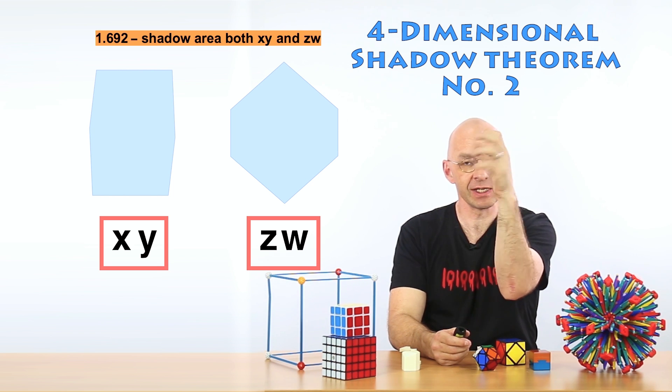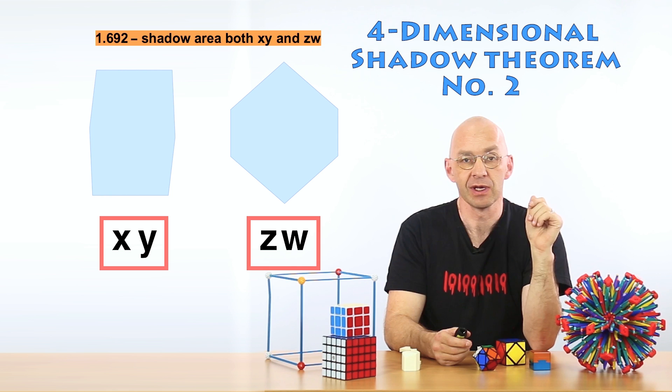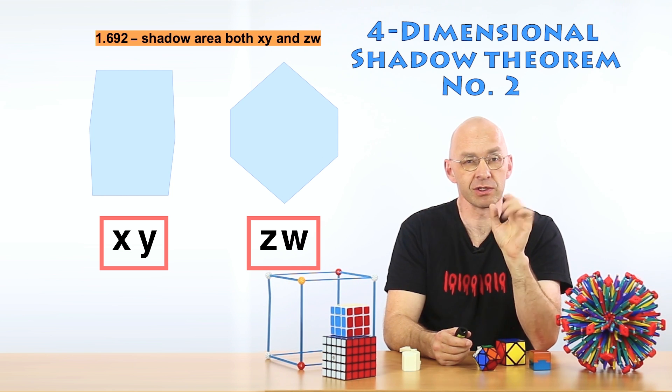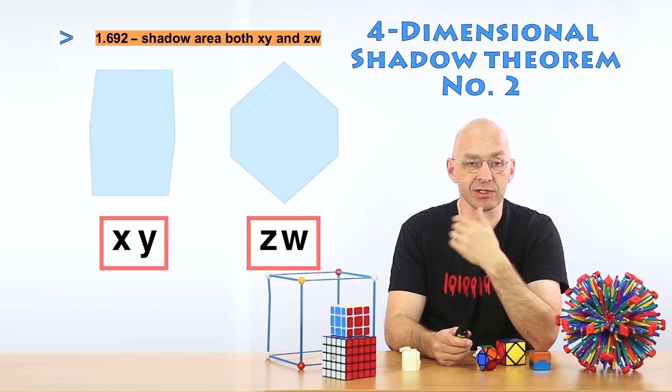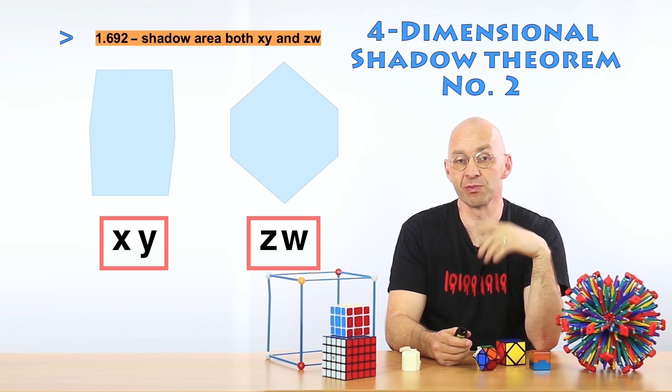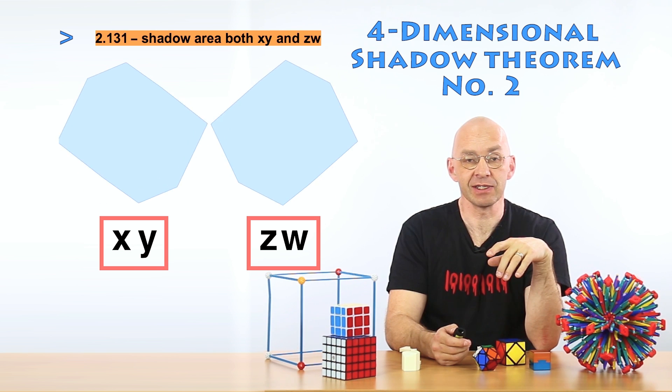But again, if you're rotating a unit hypercube, the areas of these two shapes are always going to be exactly the same. And then we can ask again, well, what are the maximum shadows here? And these are also super, super nice. We're just coming up in a second here.